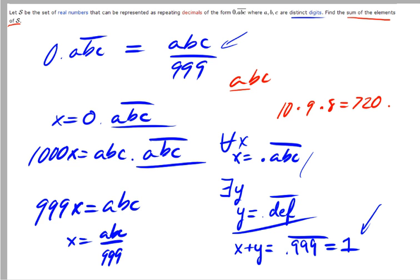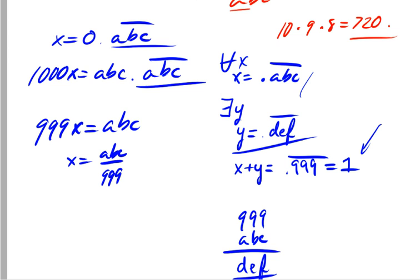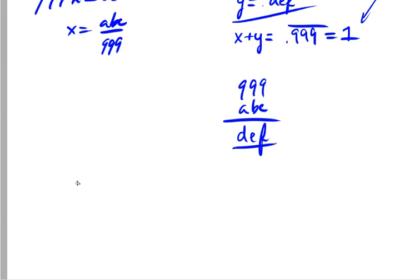And so we have 720 total elements in s, but each can be paired with a complement to sum to 1. So the sum of all elements is 720 divided by 2, which is 360.